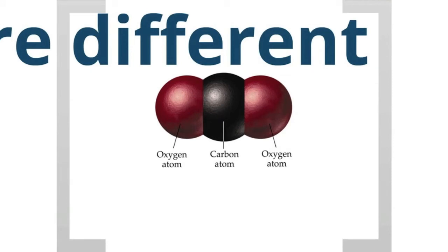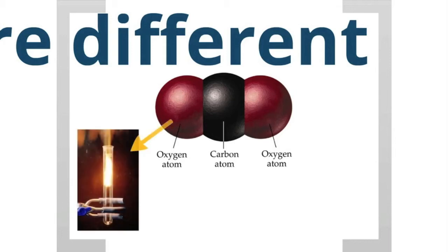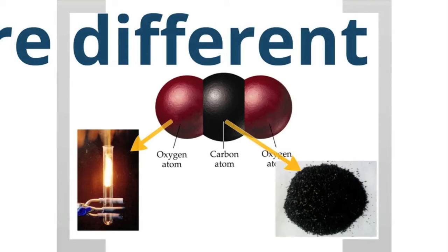this is a carbon dioxide molecule. It has two oxygen atoms, and it has a carbon atom. That oxygen atom, if it were by itself, it would ignite when put on a flame. Oxygen is a very flammable element. But that carbon atom, if that carbon atom were by itself, then it will look like that black powder.